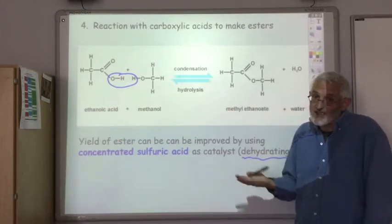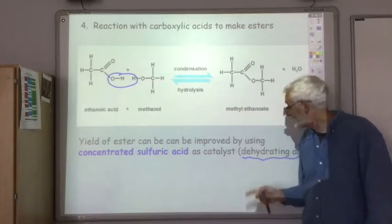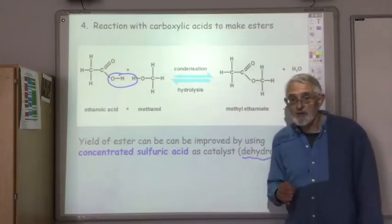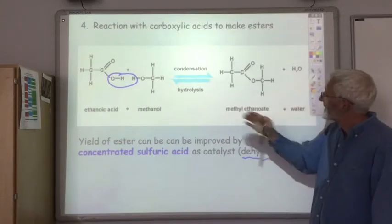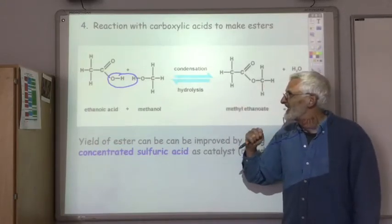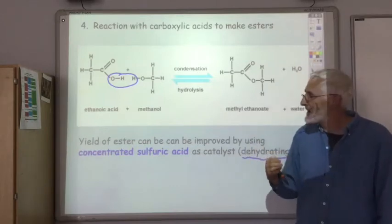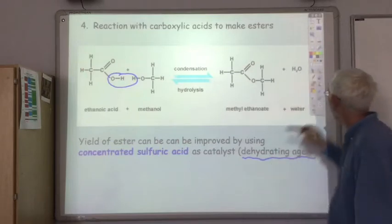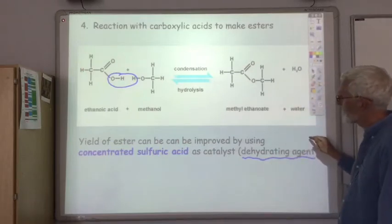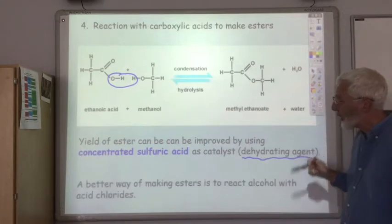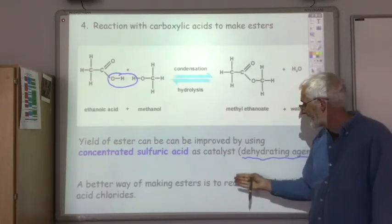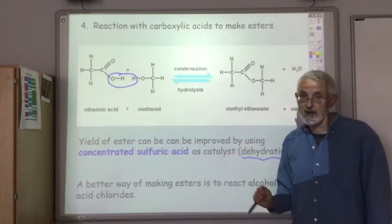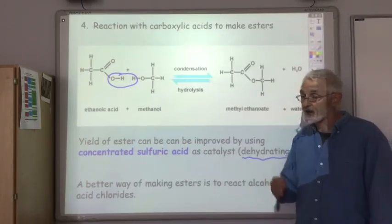Even if I say using concentrated hydrochloric acid, because hydrochloric acid is not a dehydrating agent, and so it won't remove the H2O. So there's one way of making an ester. It does tend to have a low yield. That can be improved by using concentrated sulfuric acid. However, the best thing we can do or a better way of making an ester is to react the alcohol with an acid chloride. And that's going to be the final reaction we're going to look at.